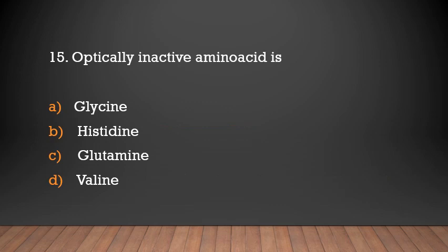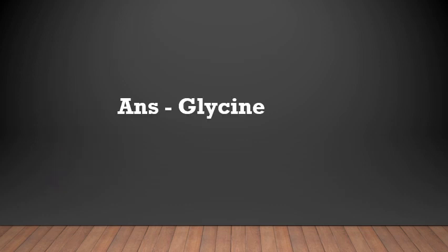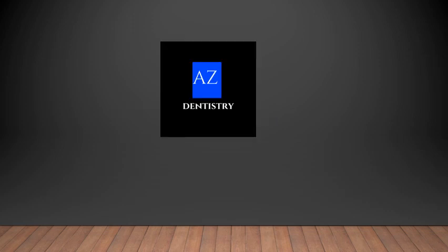Question: Optically inactive amino acid — glycine, histidine, glutamine, or valine? Answer: Glycine. Glycine is the only optically inactive amino acid. That covers all the topics on proteins — see you in a new video, thank you.